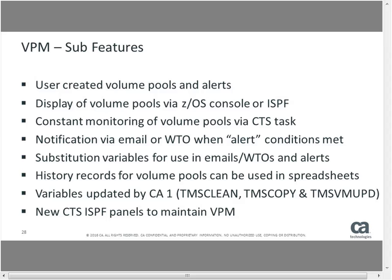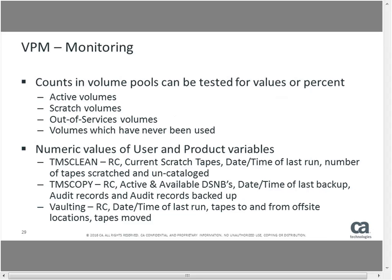The volume pool monitoring can look for pools and check how many tapes are active, scratched, out of service, or volumes that have never been used. You can look for either specific values — tell me when less than 100 scratch tapes are available — or as a percent — tell me when this pool has less than 10% scratch tapes. TMS Clean, Copy, and vaulting also create variables such as return code, current scratch tapes, date and time of the last run, how many audit records were backed up, and how many tapes went off-site.